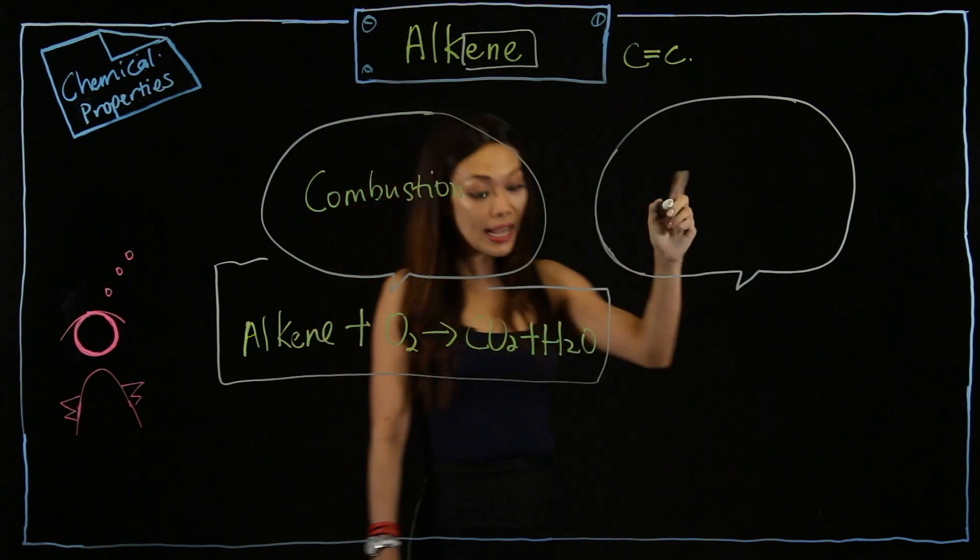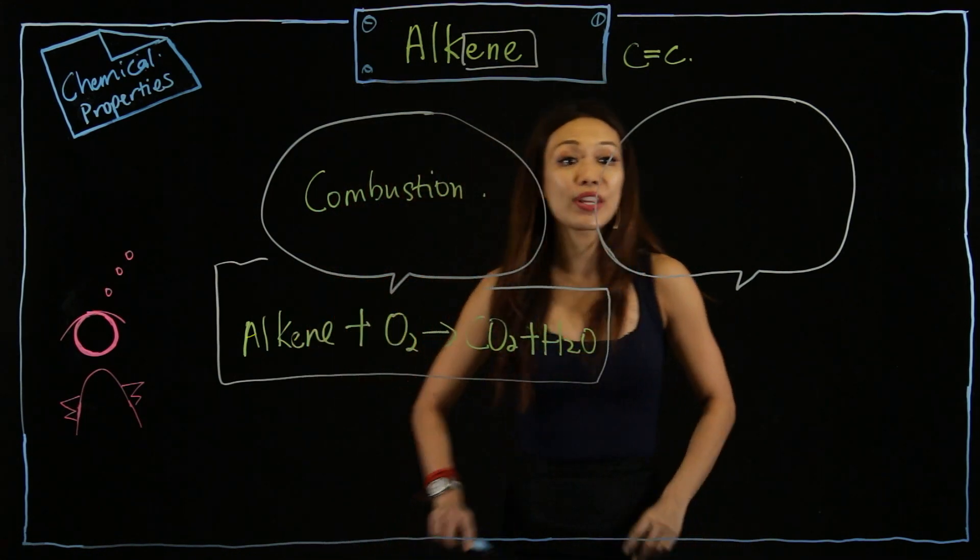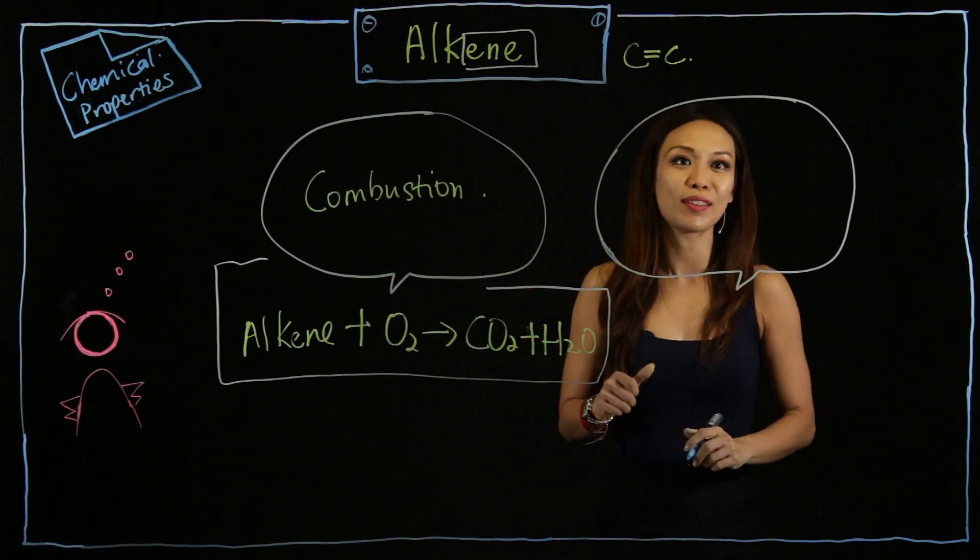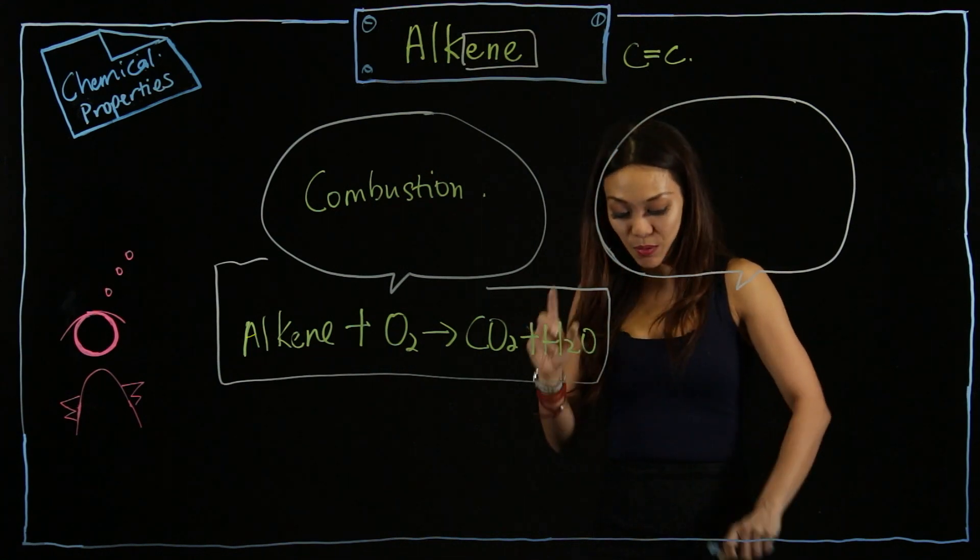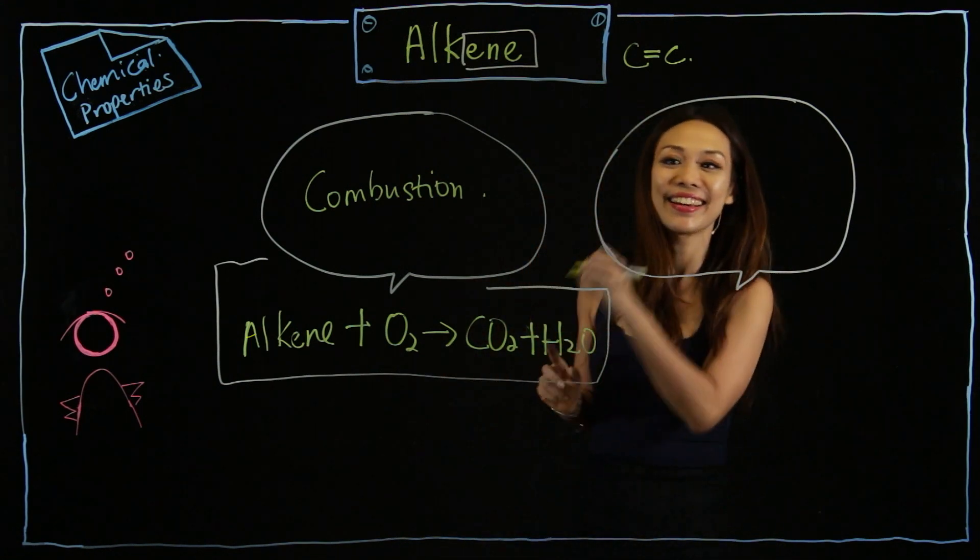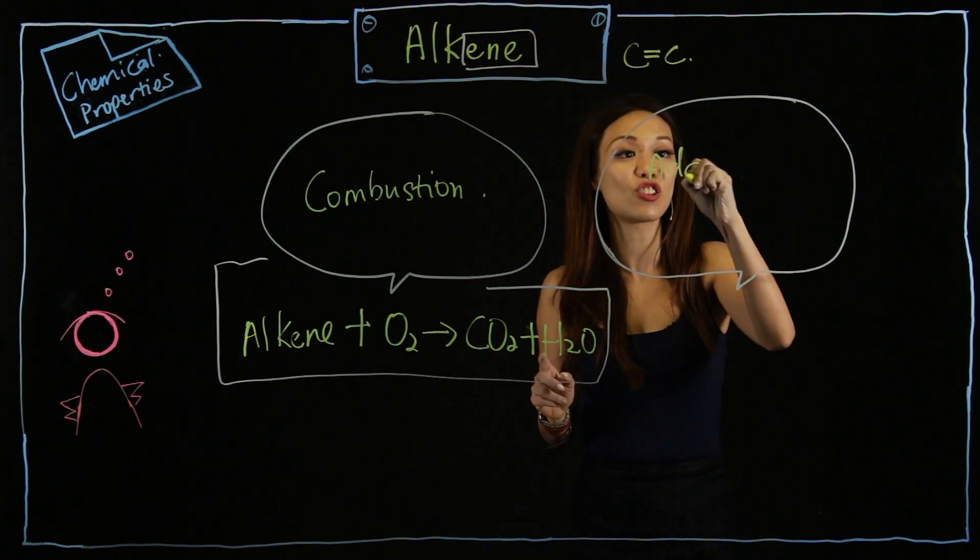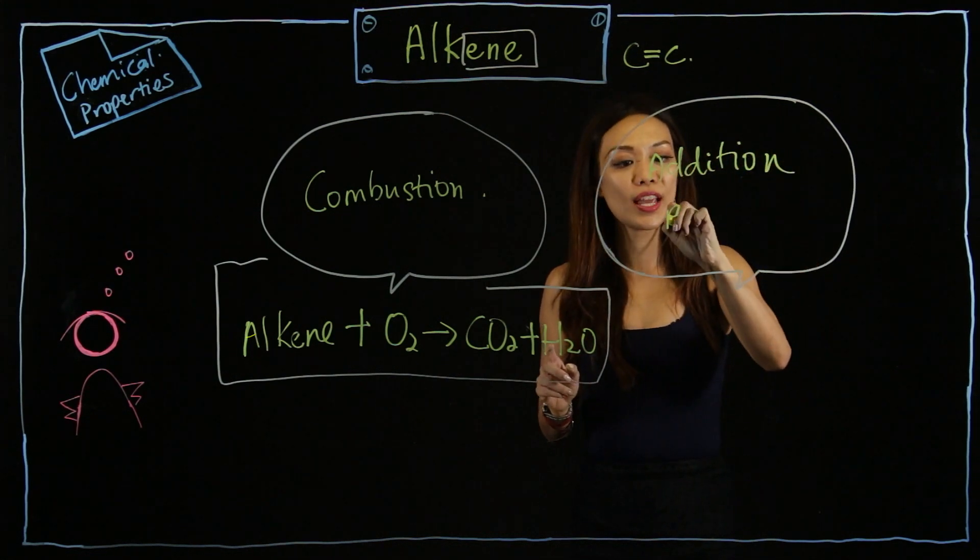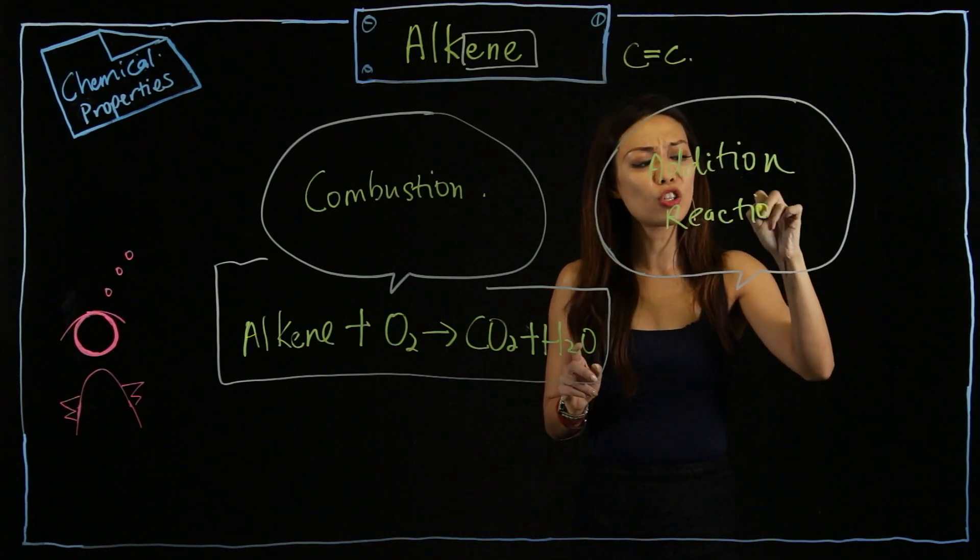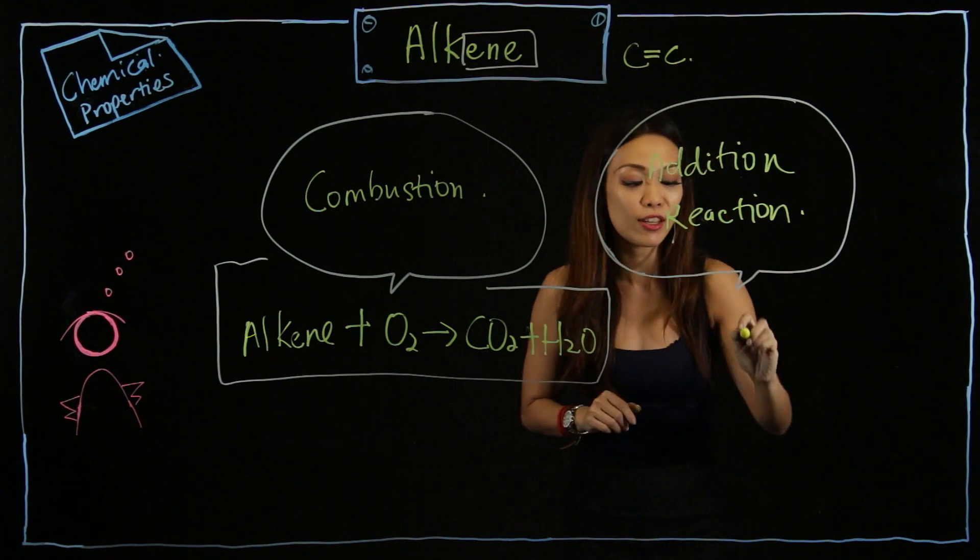Next one, alkane will go to substitution, but for alkene they will go through addition reaction. This addition reaction I summarize into three H.